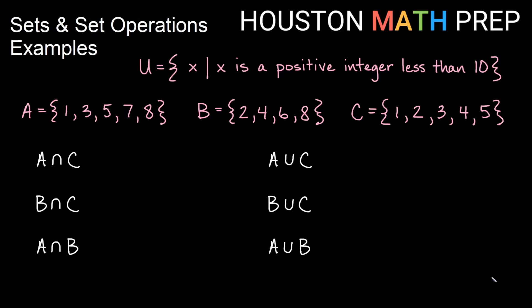Let's look at some intersections and unions. Working down our intersection list — this can be thought of as an 'and' symbol. So A intersect C: I want all of the things that are in A and C. 1 is in both, 3 is there, and 5 is there as well. So 1, 3, and 5 are all of the elements in both. 7 and 8 are in A but not in C; 2 and 4 are in C but not in A. We need them to be in both.